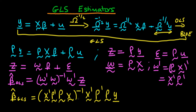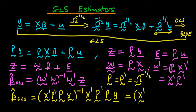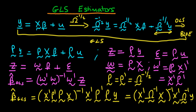Finally, substituting the explicit form for P and P', noting that P = P' = Ω^(-1/2), we get that P'P = P² = Ω^(-1). Therefore, β̂_GLS = (X' Ω^(-1) X)^(-1) X' Ω^(-1) y. This is the explicit form of the GLS estimator. Note that it involves the inverse of the variance-covariance matrix, and using this estimator in the presence of heteroscedasticity allows us to obtain BLUE estimates of the parameters.